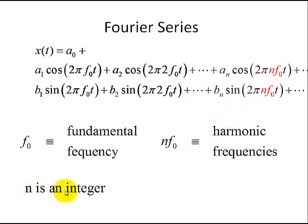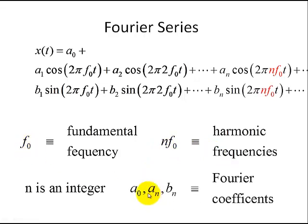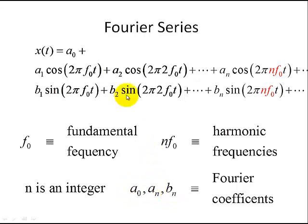We note that n is an integer, so we can only have a discrete set of frequencies that are harmonics of the fundamental frequency. The harmonic frequency is just an integer multiple of the fundamental frequency. Our coefficients a0, which is our DC signal, and An and Bn are our Fourier coefficients. In a later video, I'll show that these Fourier coefficients are the components of the signal, and there is a vector analogy that you see in vector algebra.